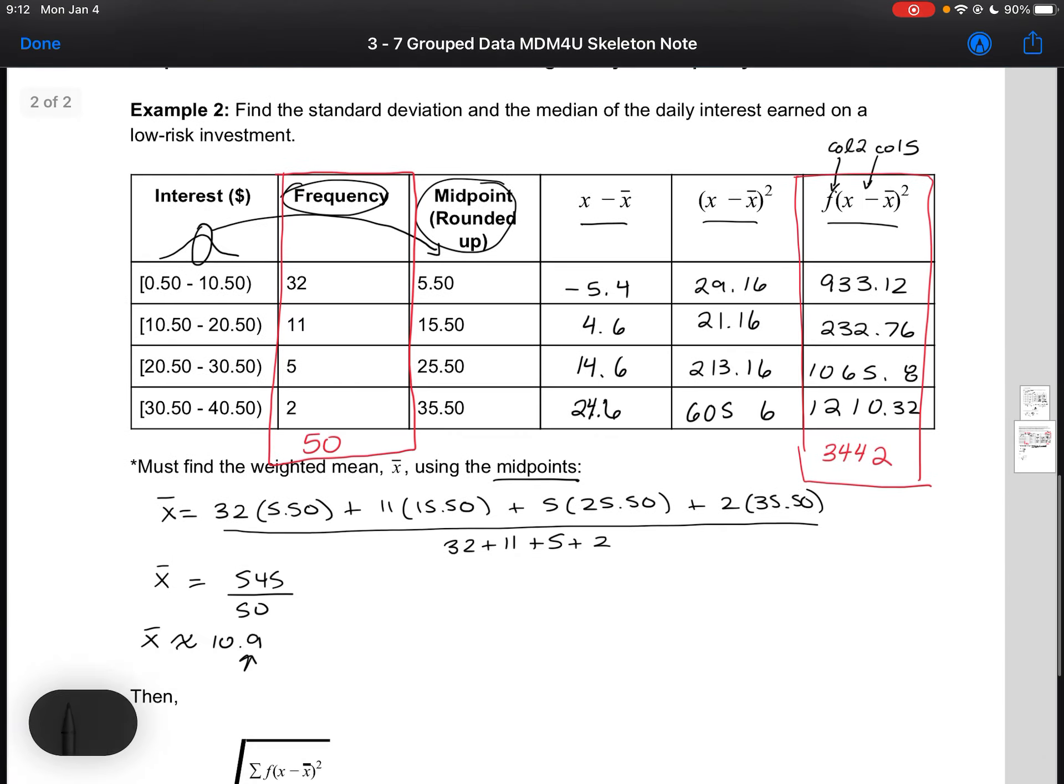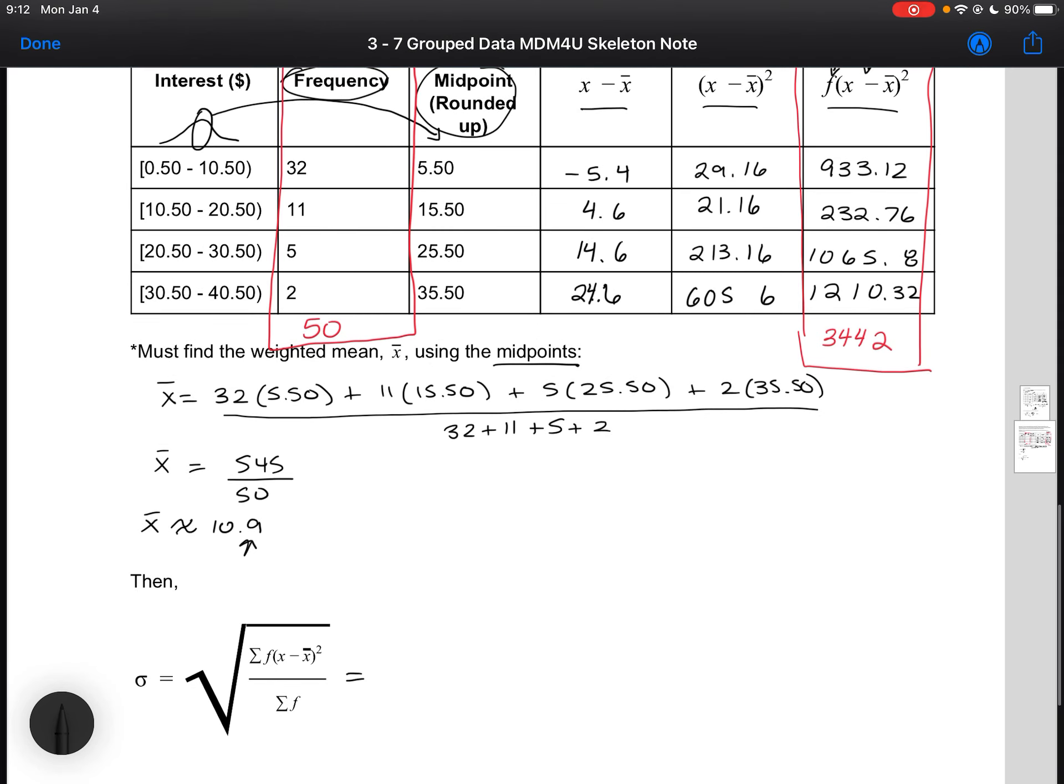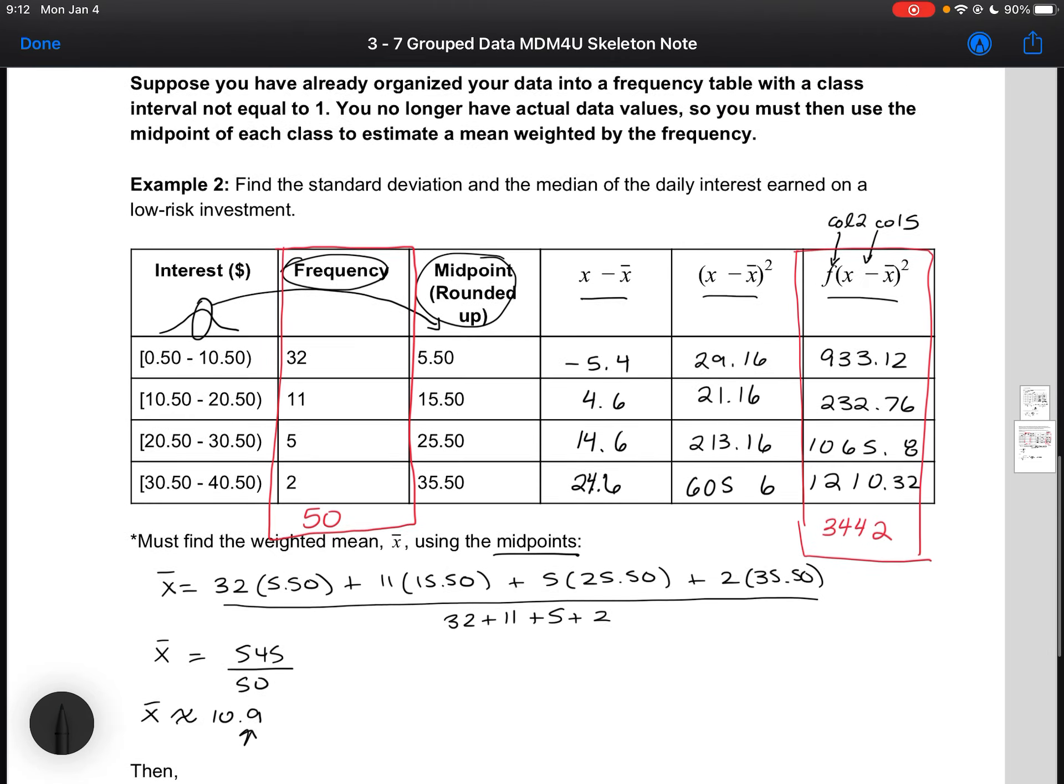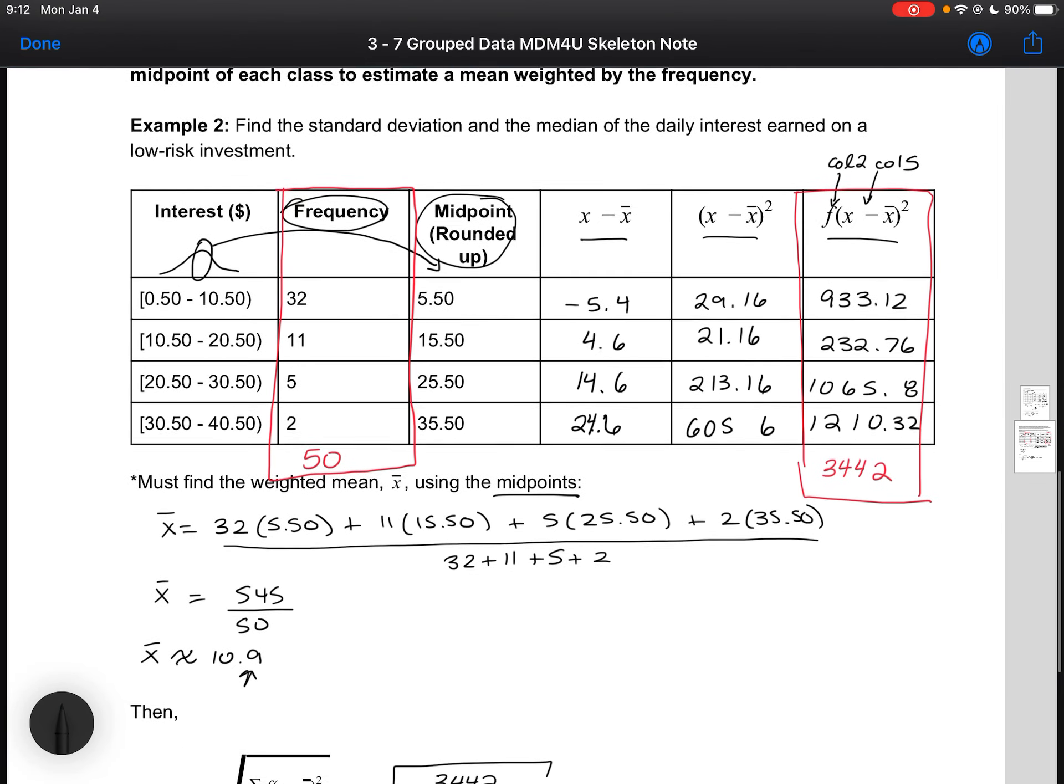Once we have those two values, we can plug them in to our standard deviation formula. Again, you don't need to memorize this. I would give the formula to you on a quiz, assignment, or test. Putting in our values here, we've got 3,442 divided by the sum of our frequency column, which is just the number of our data points. Evaluating that gives us a standard deviation of 8.30.